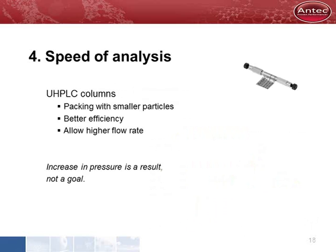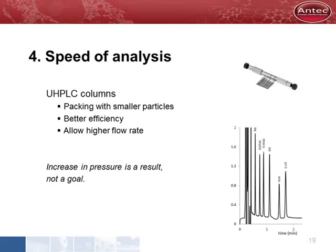New UHPLC columns have been developed with smaller particle size. According to the van Deemter equation, these columns should have improved efficiency and allow a higher flow rate. This is an example of UHPLC of a standard mix of neurotransmitters. Analysis time is less than two minutes, which is feasible for standards. However, we found there is a trade-off in analysis time versus detection limit.